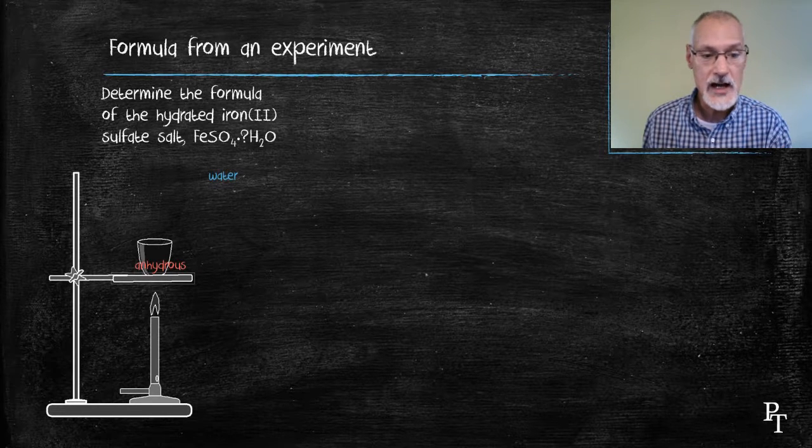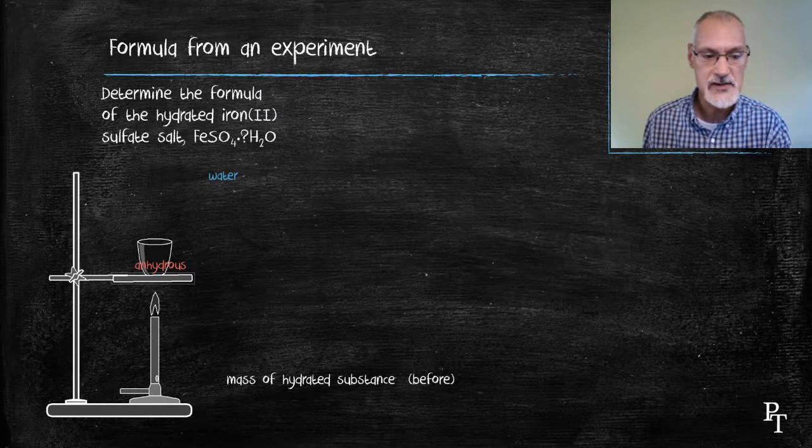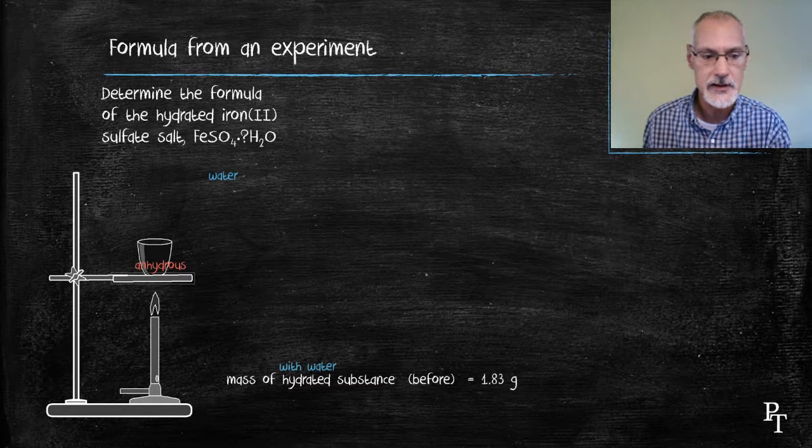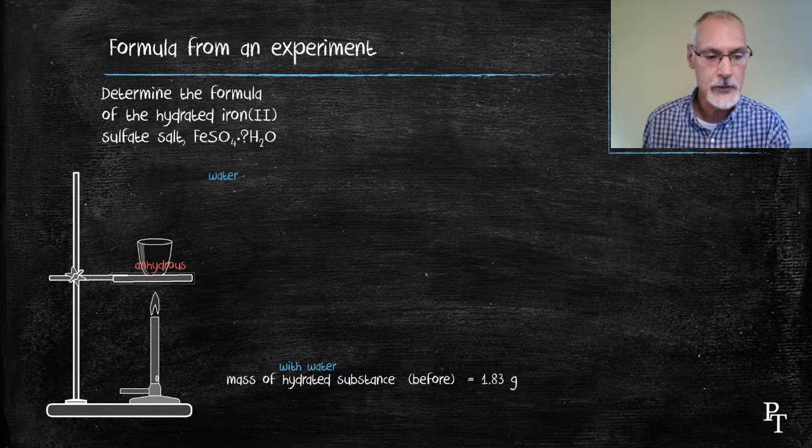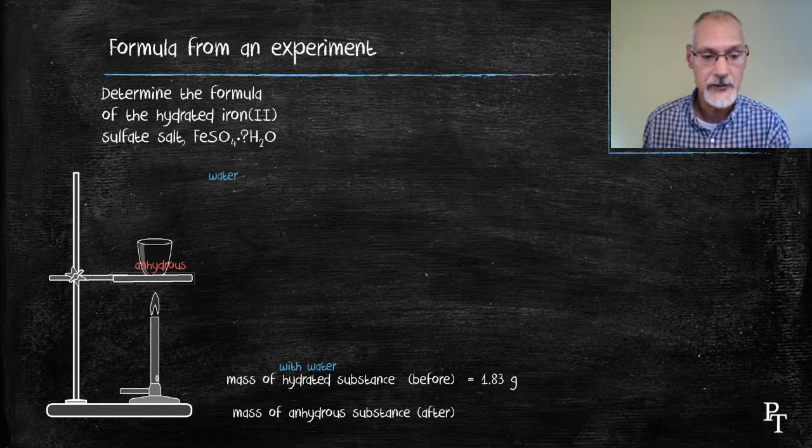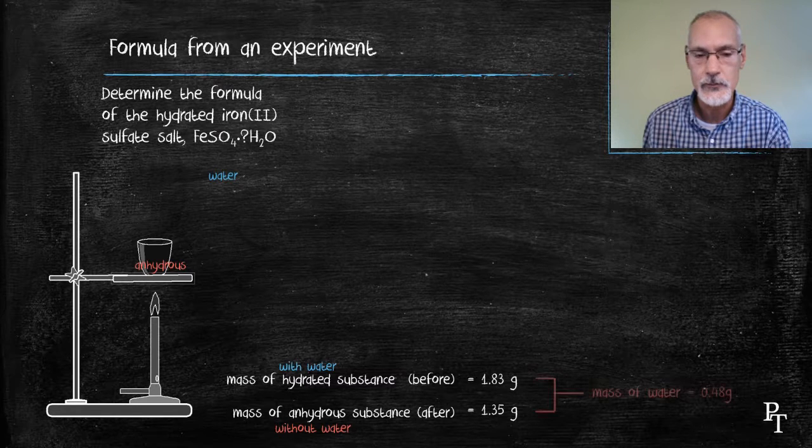My weighings, the mass of the hydrated substance, that's the substance with the water, was 1.83. After the experiment's over, I'm left with the dry substance that's lost the water, and it weighs 1.35. The difference between the two, then, would be the mass of water.